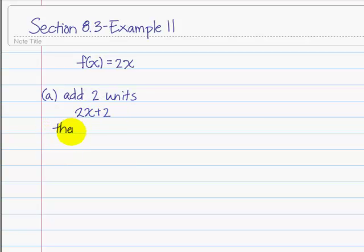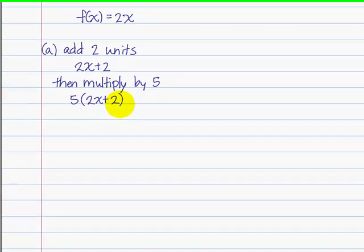And then, we're told to multiply by a factor of 5. So we get 5 times the quantity 2x plus 2.